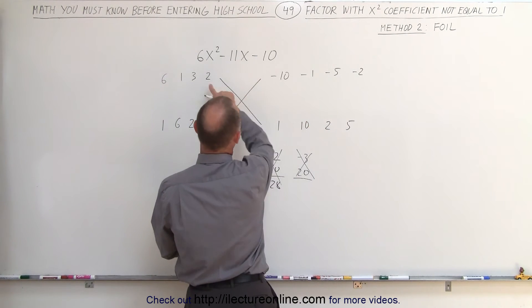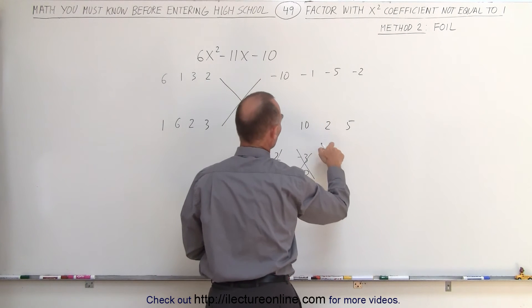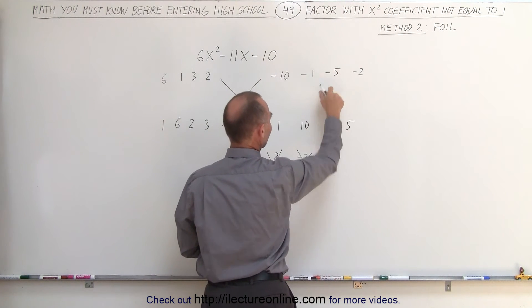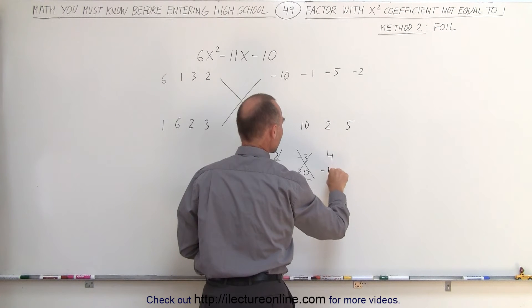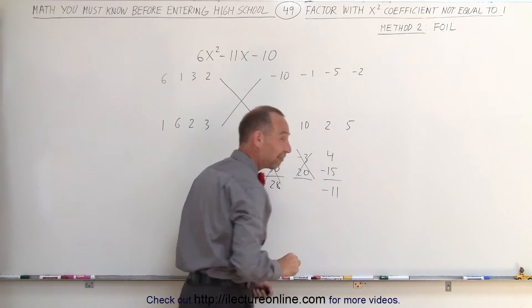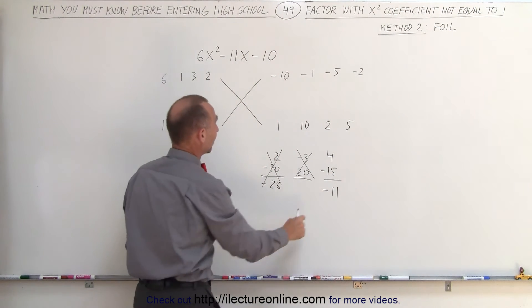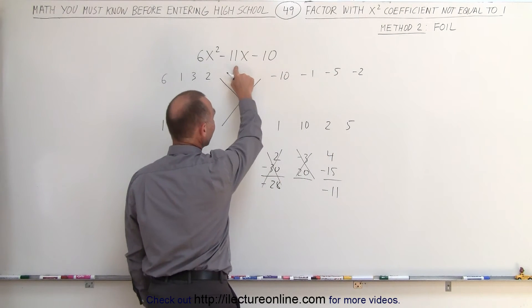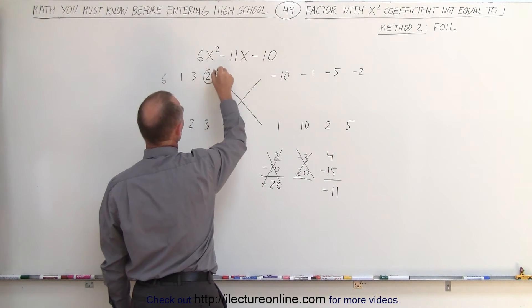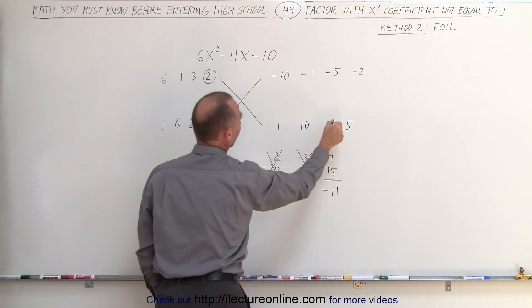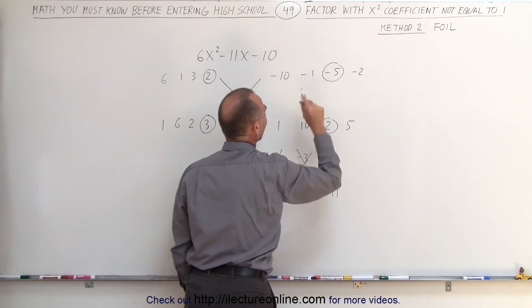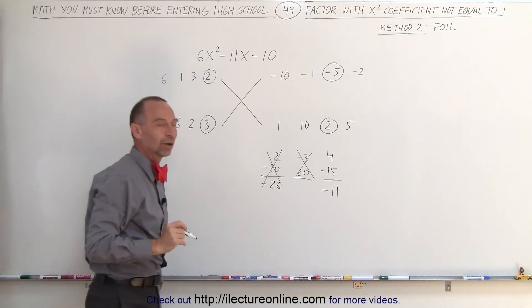So we have 2 times 2, which is 4, and 3 times negative 5, which is negative 15. When I add those together — negative 11 matches negative 11, which means after just 3 tries I get the right number. I have the number 2 multiplied times 2, and the number 3 multiplied times negative 5, and I have the correct solution.